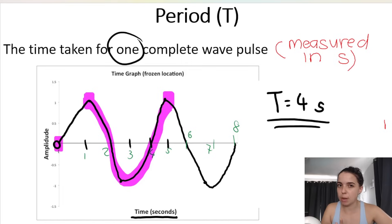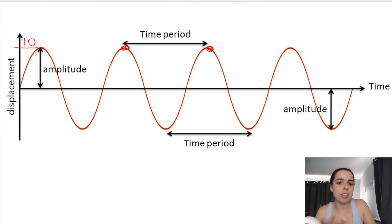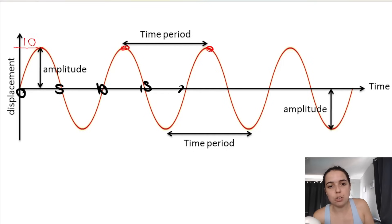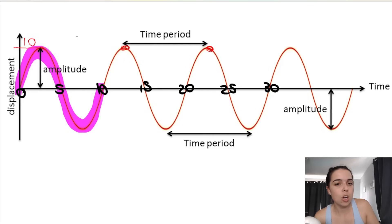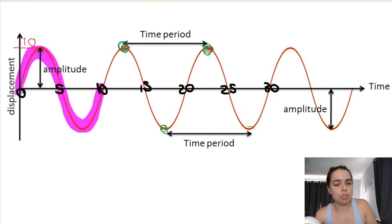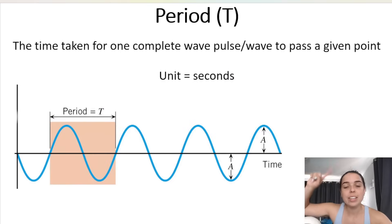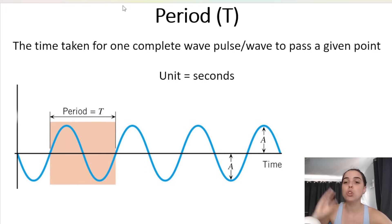Here's another representation — let's say the values are 0, 5, 10, 15, 20, 25, 30, and so on. To find the period, look between two successive points in phase: from here to here is 10 seconds. Or crest to crest — that's also 10 seconds. Trough to trough — also 10 seconds. So the period of this wave is 10 seconds.